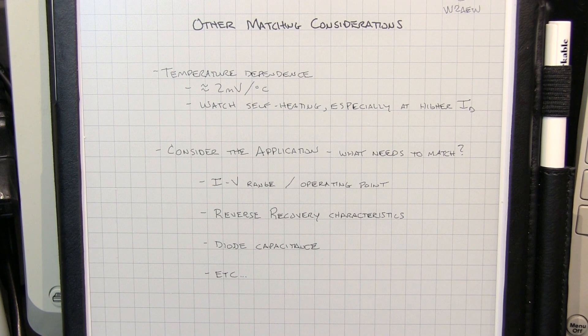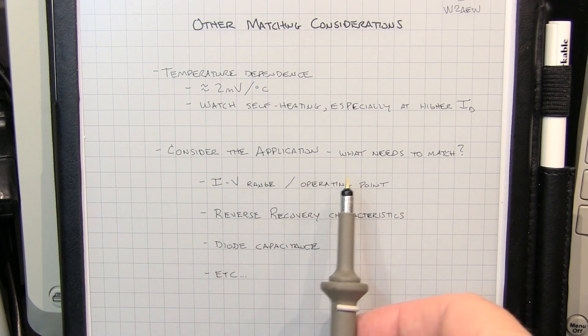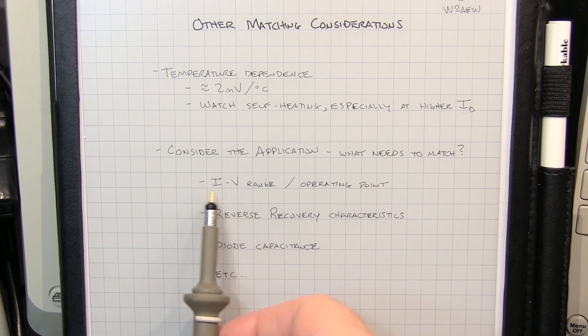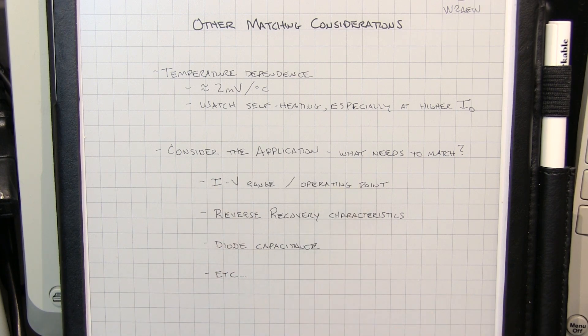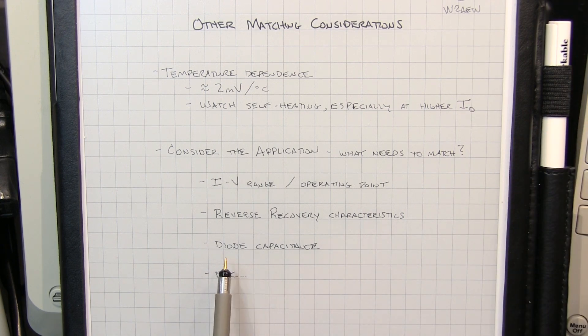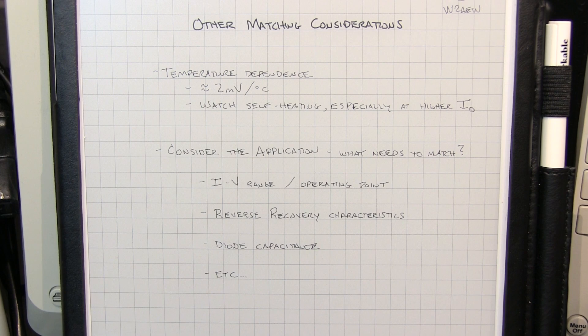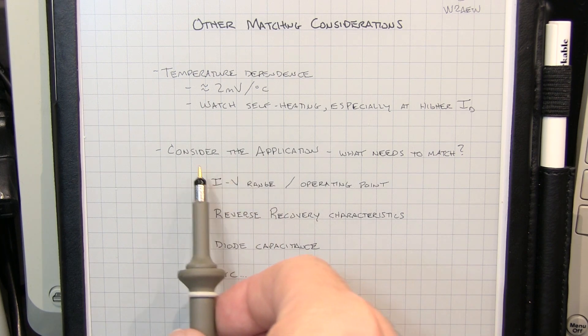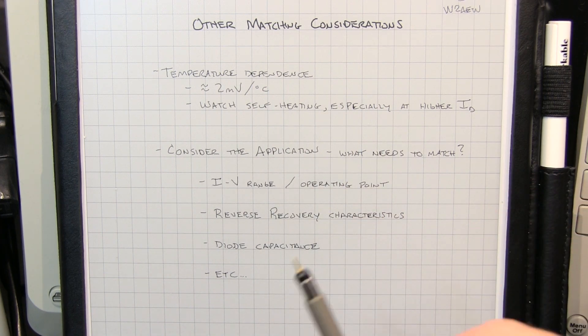The last thing to mention here is to consider the application. You really want to understand why that application needs matched diodes, and what does it need to match? Is it a particular voltage current range within the diode curve that it has to match? What's the operating point in the particular circuit? That circuit might actually need the reverse recovery characteristics of the diode to match. And we didn't talk about that in this video, but I do have another video that talks about reverse recovery time measurements, and I'll link that down below. For RF or high-frequency applications, it might be that the diode junction capacitance is what has to match in order to get the particular characteristics out of that circuit. I do have a video that talks about diode capacitance measurements in my varactor diode video. Again, I'll link that one down below. It might be leakage current or other characteristics that have to match in order for the circuit to work properly. So the bottom line is to really understand the application, what needs to match, and make sure you make those measurements to match those diodes as close as possible to the operating conditions that they're going to see in that application.